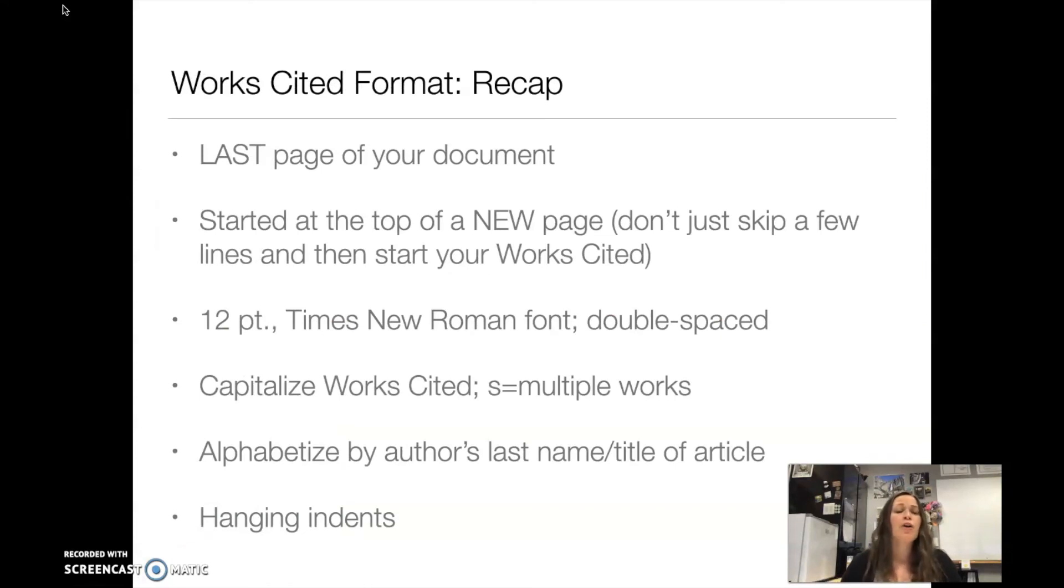Okay, quick recap. Your works cited page should be the last page of your document. It should start at the top of a brand new page. Again, don't just skip a few lines and start. You need to actually create a new page within your document. It should be in 12-point Times New Roman font, as should the rest of your document, and it should be double-spaced, again, as should the rest of your document. Please capitalize Works Cited and the S at the end of works indicates that you have multiple works to cite. Alphabetize your citations by author's last name and or the title of the article. And please make sure to include hanging indents. And that's pretty much it for the basics of a works cited page.